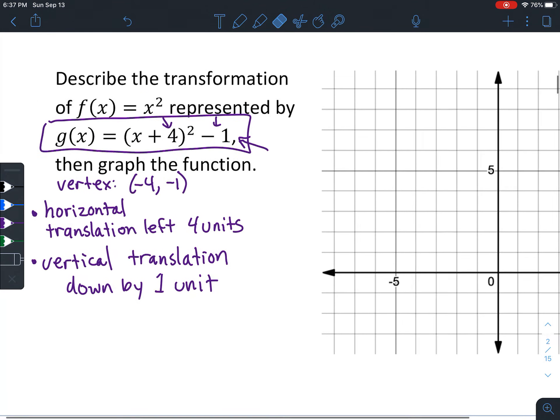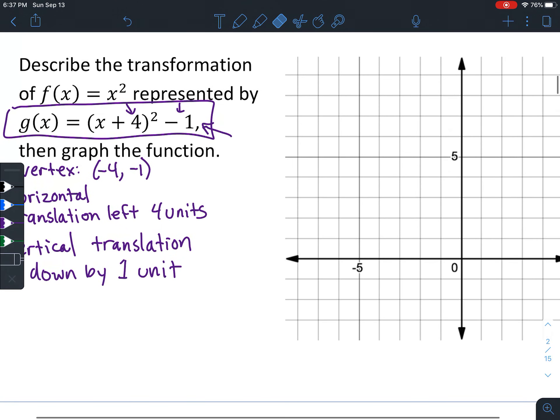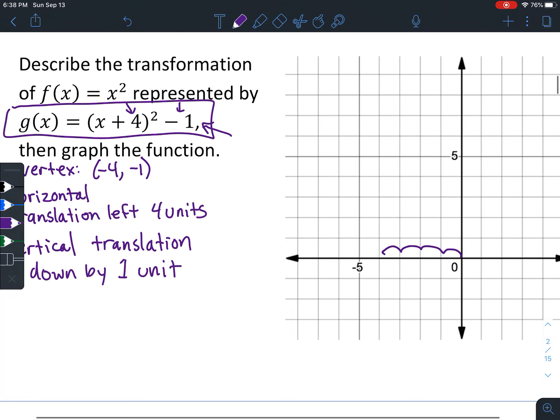You can see that because of the minus 1. The y value tells you up and down, right? So if you go down 1 from 0, then you are moving down 1. This is combining two different transformations. So let's draw our vertex, which is at (-4, -1). So you go 1, 2, 3, 4. And then you go down 1. So you end up right here.